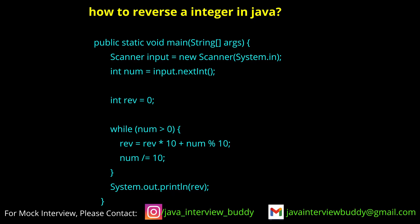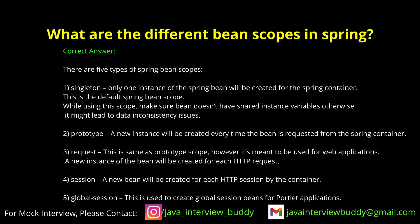What are the different scopes of beans in Spring? There are five scopes: singleton (which is the default), prototype, request, session, and global session.